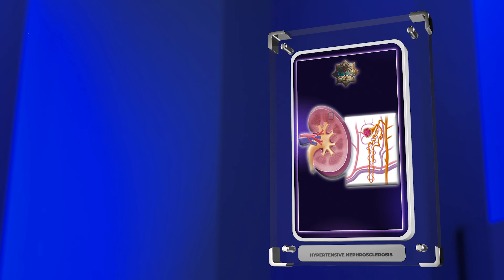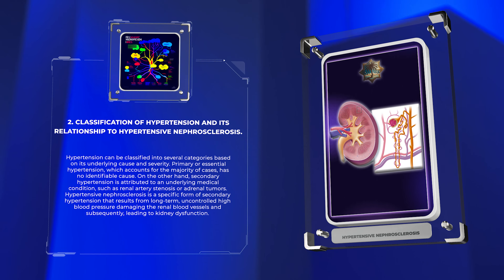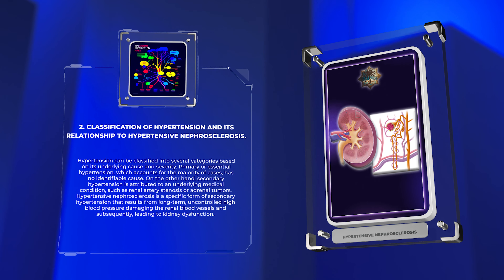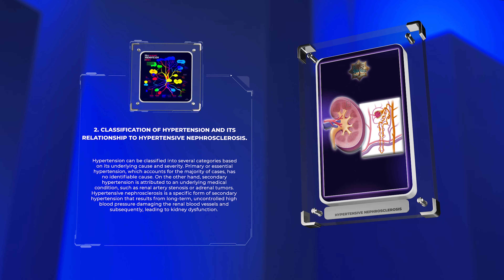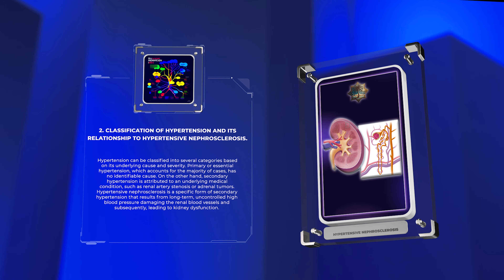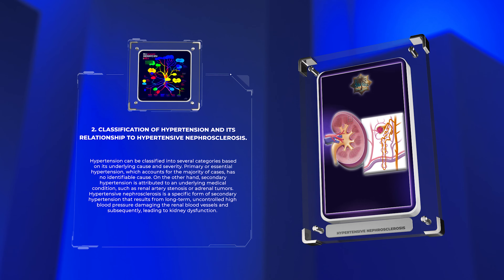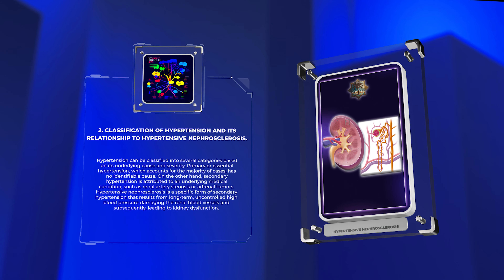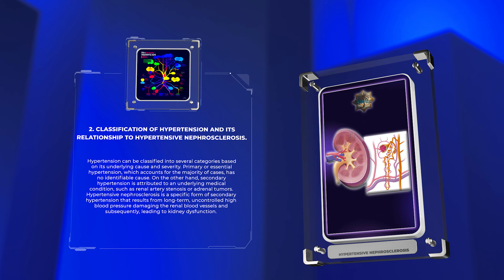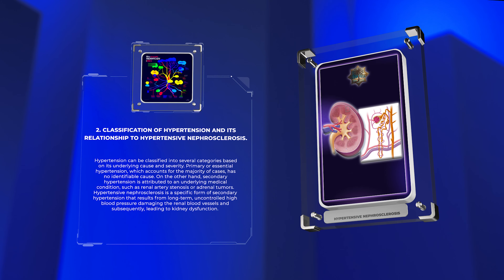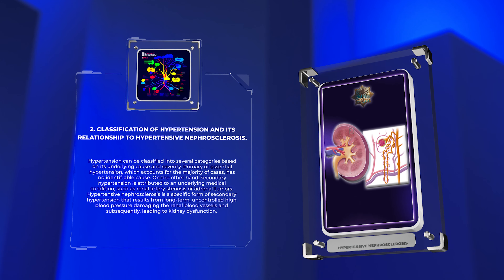Hypertension can be classified into several categories based on its underlying cause and severity. Primary or essential hypertension, which accounts for the majority of cases, has no identifiable cause. Secondary hypertension is attributed to an underlying medical condition, such as renal artery stenosis or adrenal tumors. Hypertensive nephrosclerosis is a specific form that results from long-term, uncontrolled high blood pressure damaging the renal blood vessels, subsequently leading to kidney dysfunction.